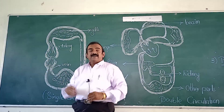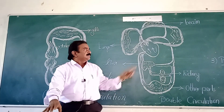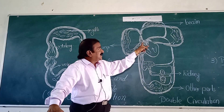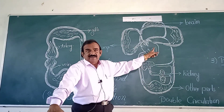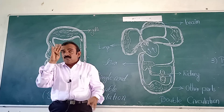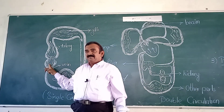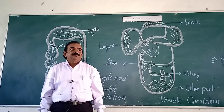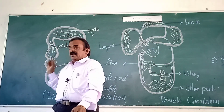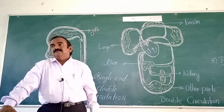In fish, only two chambers: one atrium and one ventricle. In case of mammals, four chambers are there: right atrium, left atrium, right ventricle, and left ventricle. Right side carries deoxygenated blood, left side carries oxygenated blood. So mammals have a heart with four chambers, but in case of fish, only two chambers.